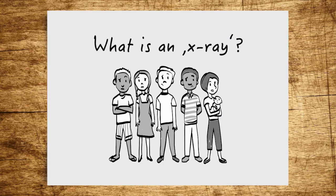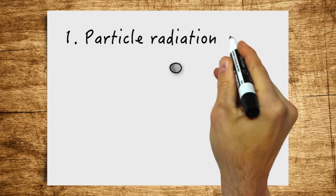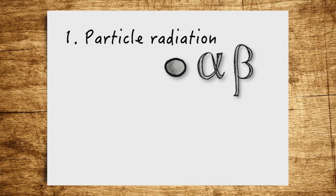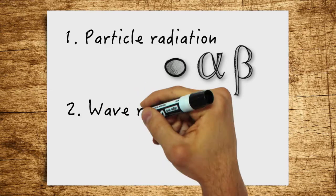So what actually is an X-ray? Simply said, there are two types of radiation on our planet: particle radiation, for instance neutron alpha or beta radiation, and wave radiation.